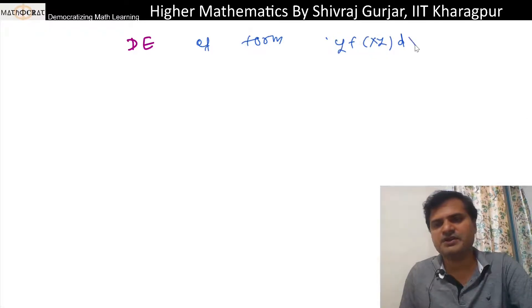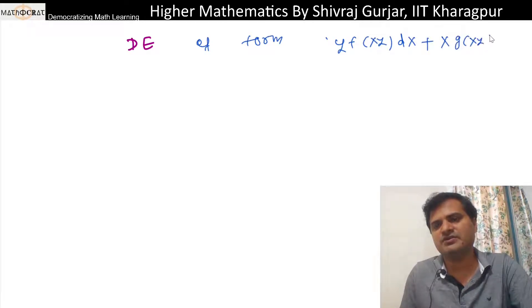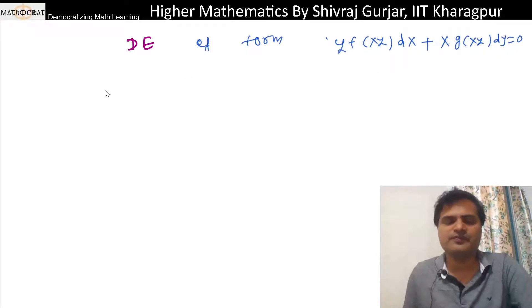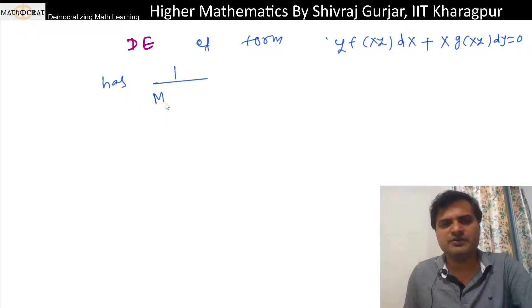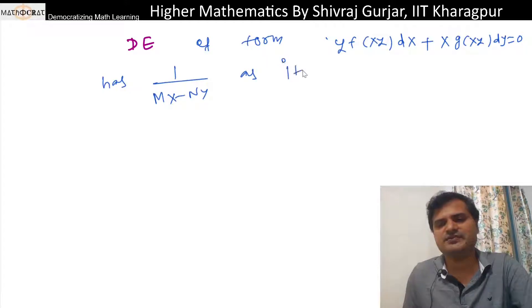Here, y·f(x,y)dx + x·g(x,y)dy = 0 is a differential equation of this form. 1 divided by Mx minus Ny is its integrating factor.